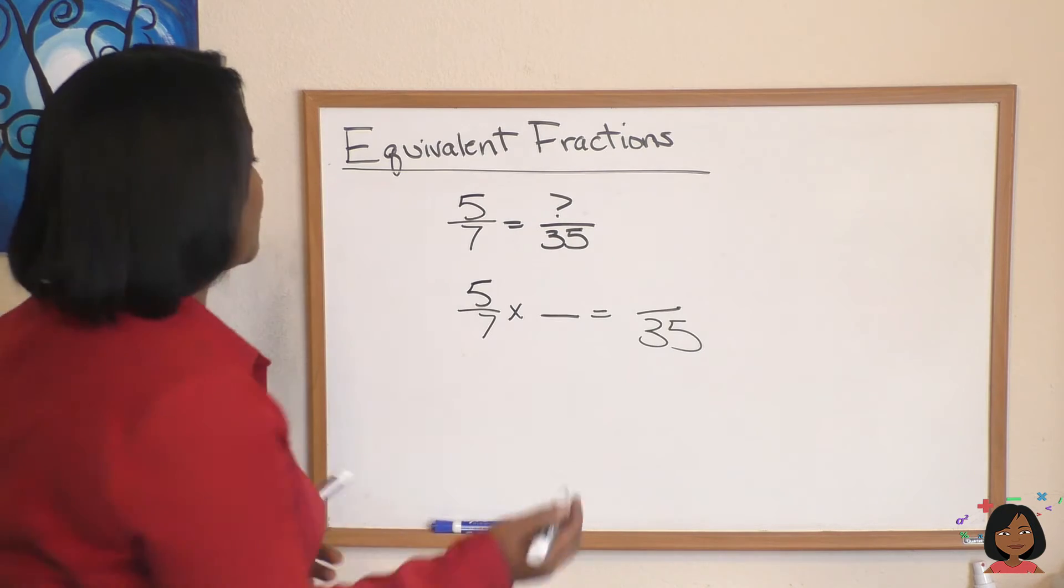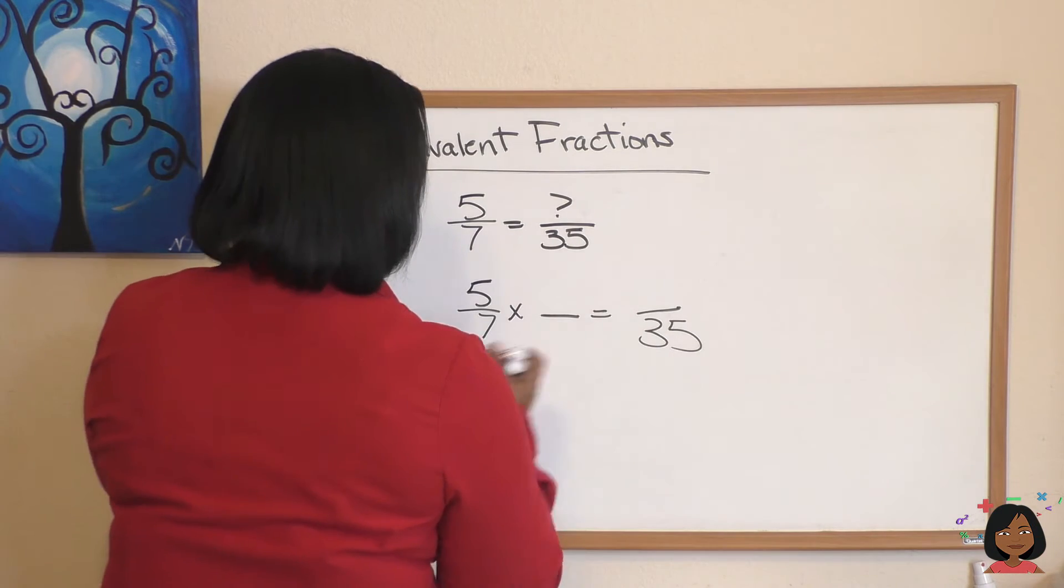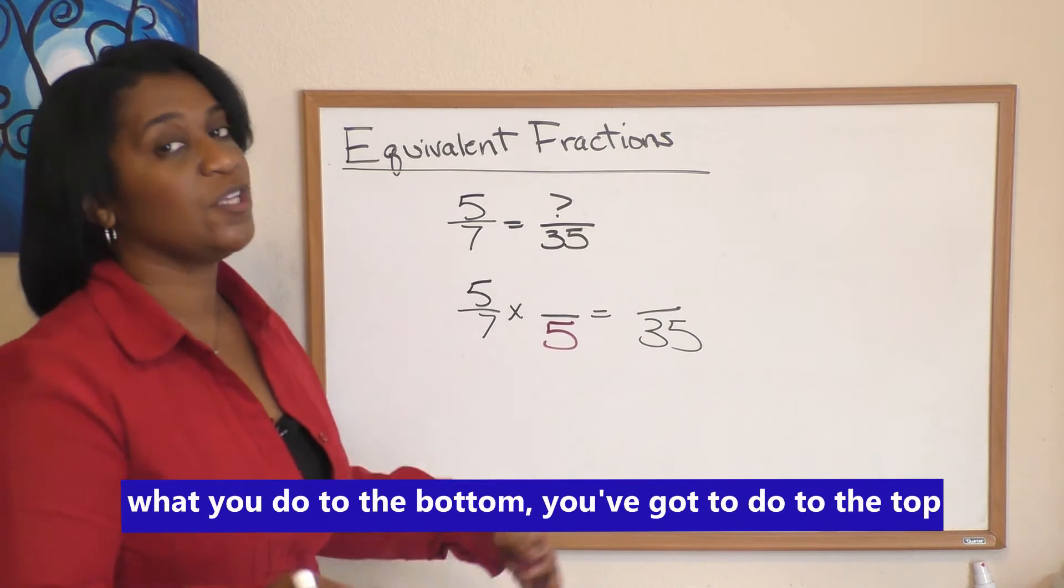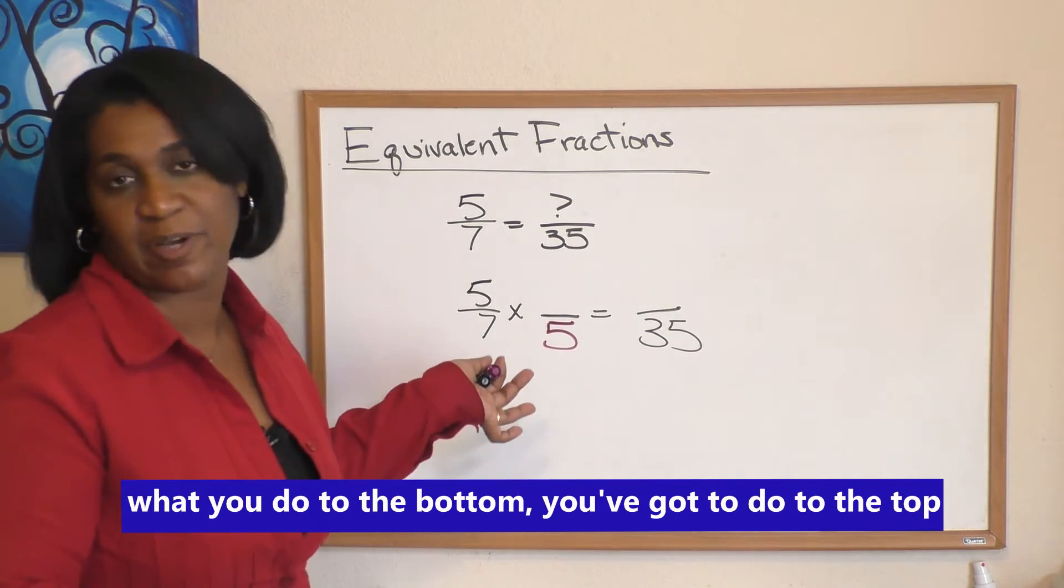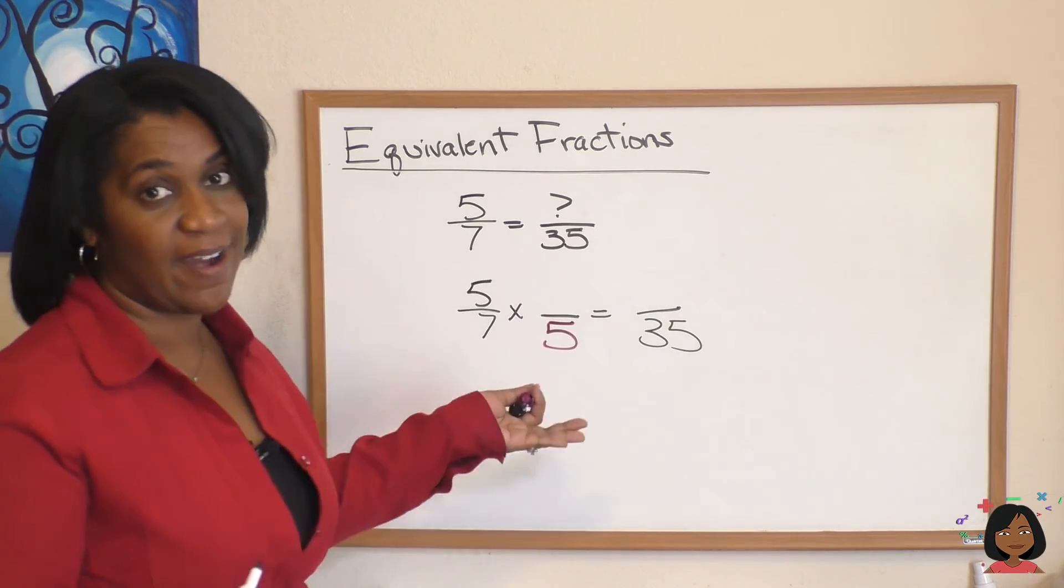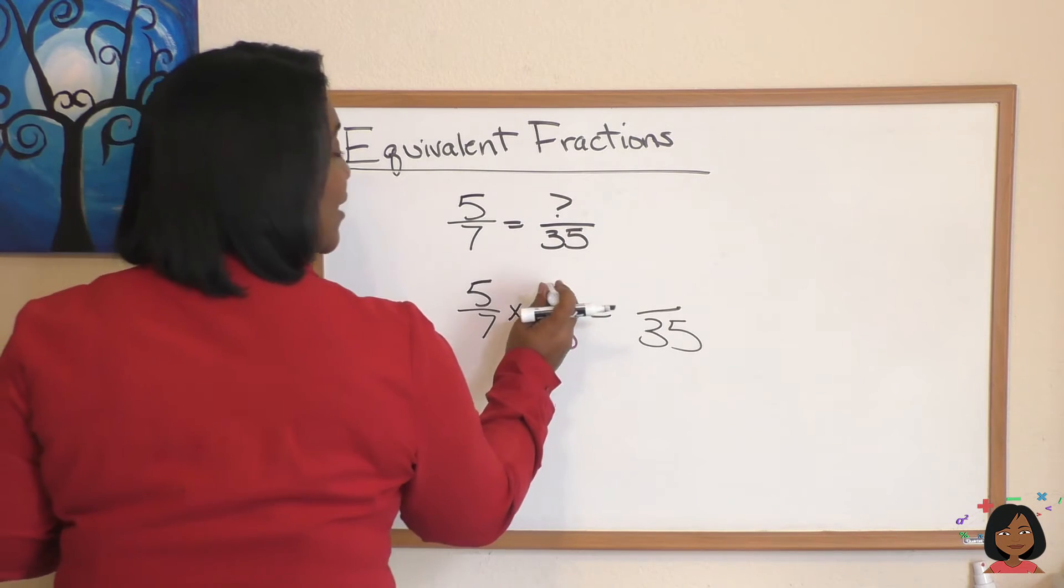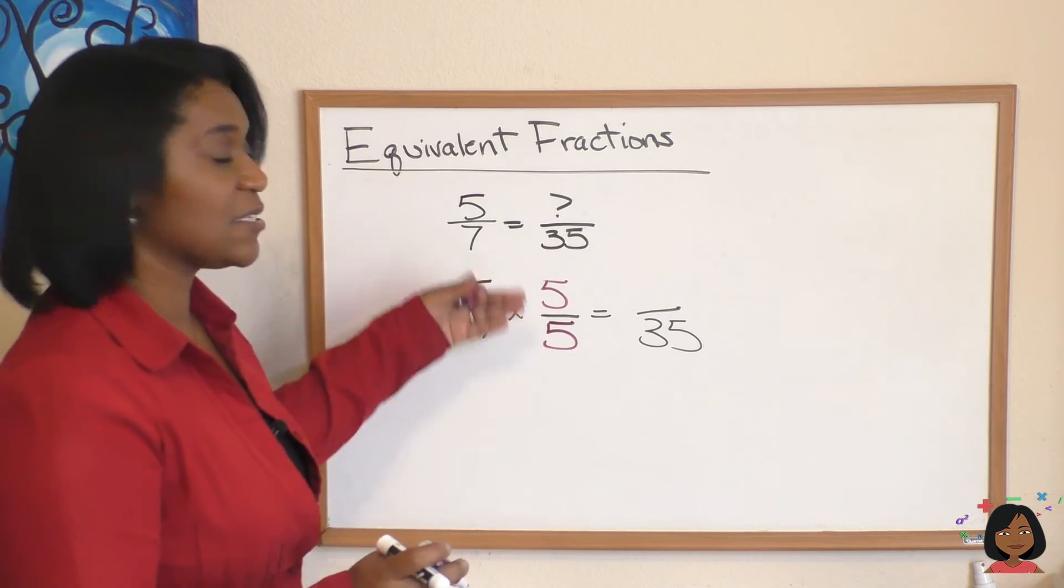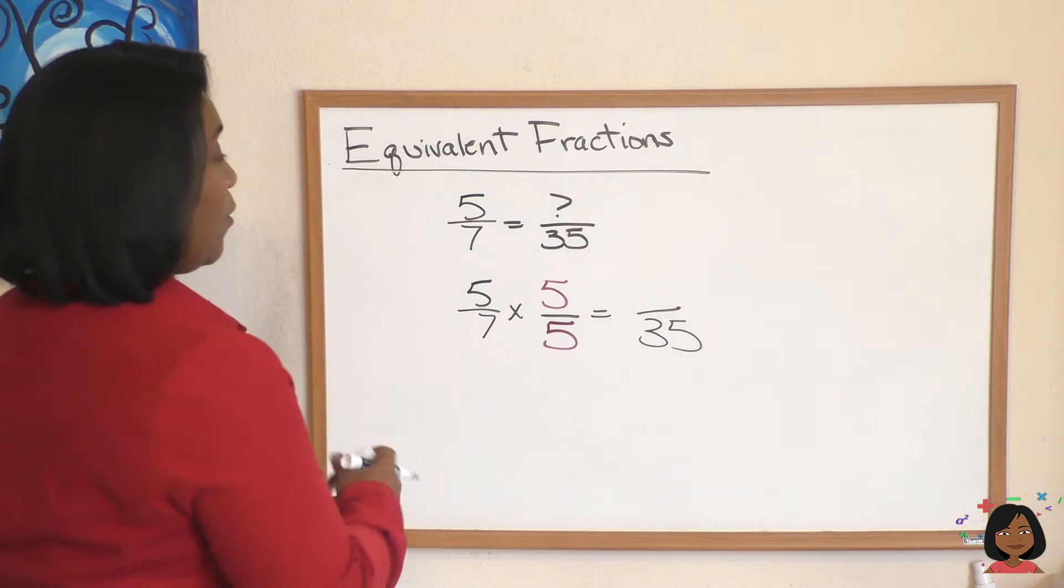Let's write that in red. Now, the principle of math: what you do to the bottom, you've got to do to the top. Okay, it's not really a principle, it's an axiom, but that's how my brain thinks. You got to be fair. What you do to the bottom, you've got to do to the top. So if I multiply the bottom by five, I've got to multiply the top by five. Here we go: five times five is 25.